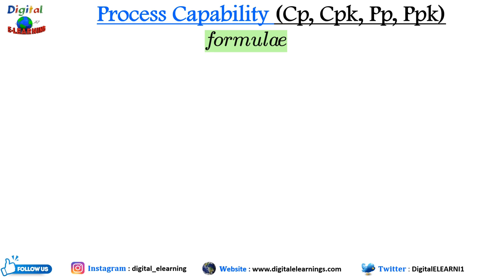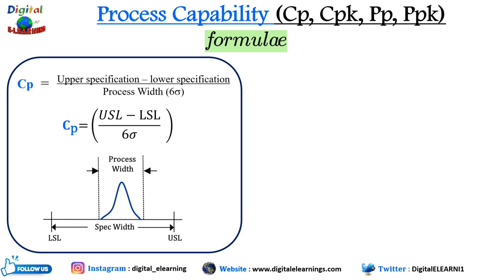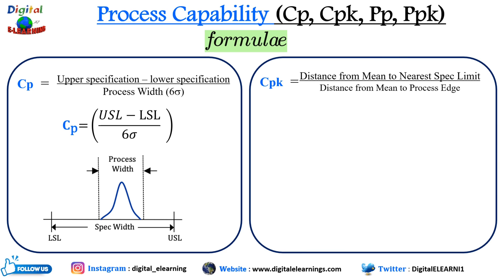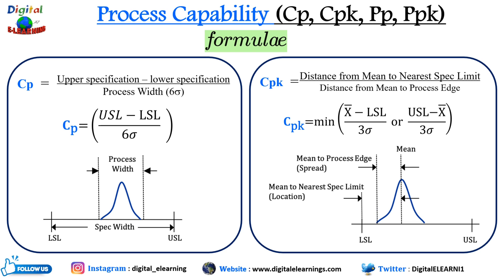Let's look at some formulas to calculate cp and cpk. The formula for cp is: upper specification limit minus lower specification limit, divided by the process width — that is six sigma. So it is (USL − LSL) / 6σ. For cpk, it is the distance from the mean to the nearest specification limit, divided by the distance from the mean to the process edge. In short, it is the minimum of: (x̄ − LSL) / 3σ, or (USL − x̄) / 3σ.